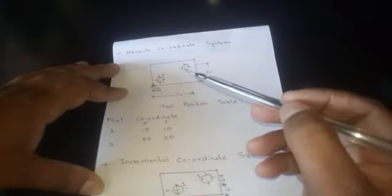That is it will be total 20 mm, but actually the tool movement will be only 10 mm. So when you're giving the dimension with respect to a fixed reference point, that is called the absolute coordinate system.